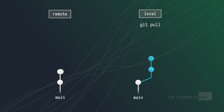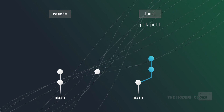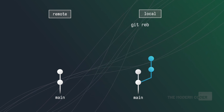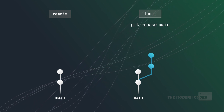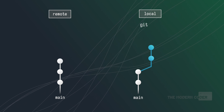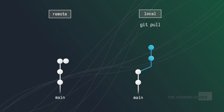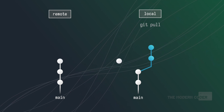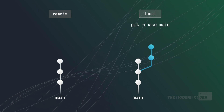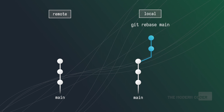Here comes the pro workflow tip. Periodically running this rebase operation to re-anchor your feature branches allows you to iteratively keep up to date with remote changes. The key part is that you're spreading out the work of keeping your feature branch up to date, so you don't have to do it all at once at the end.